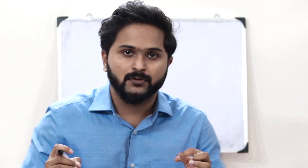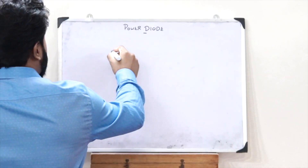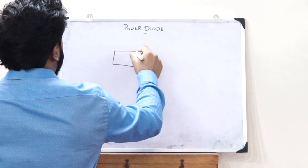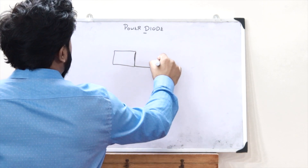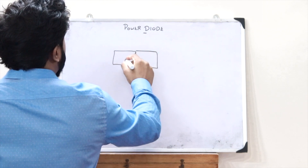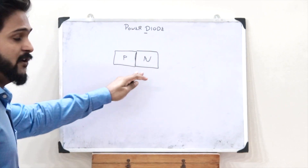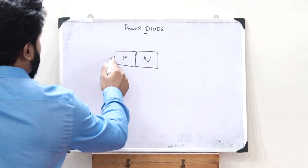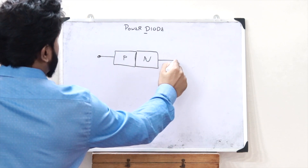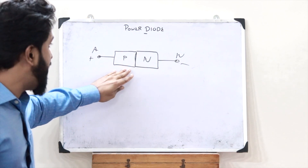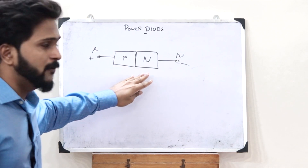So we know what a basic P-N junction diode is. That is when we take a P-type semiconductor and place it along with an N-type semiconductor, we get a P-N junction diode. Here, this is the anode and this is the cathode. So this is a basic P-N junction diode.